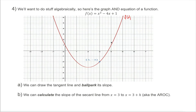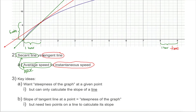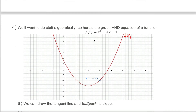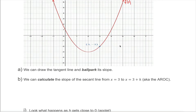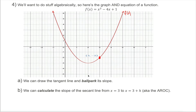It probably doesn't make sense to think about position and time because we have negative numbers, so let's throw out the application of average speed and instantaneous speed, and just think about secant lines and tangent lines. I have a curve f(x) and a point on that curve at (3, -2). What I want to know is what is the slope of the tangent line to this function at this point?